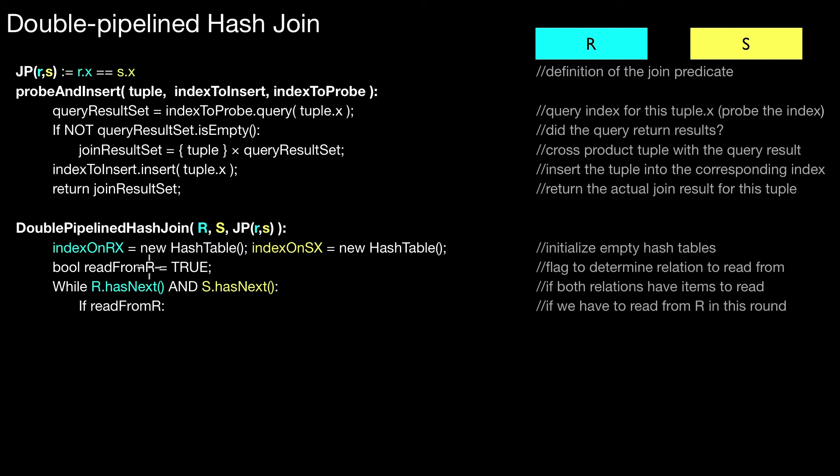I decide based on this flag. If this flag is set to true, which is the case in the first iteration, we read from R. I call this probe and insert helper method and I use as input the next tuple in the input stream from R. I pass as parameters the hash table belonging to R and the index to probe which is the other hash table. Whatever is being returned here is then appended to the output.